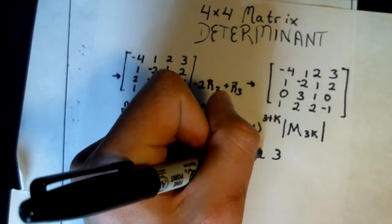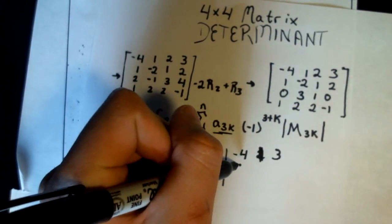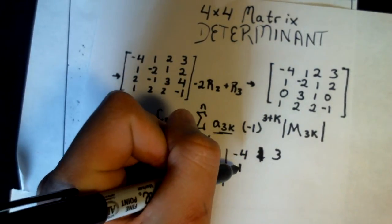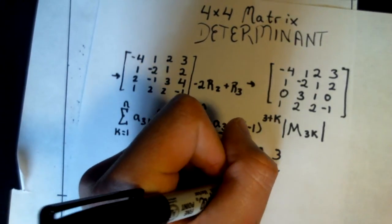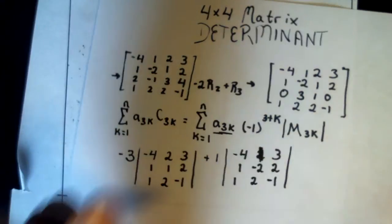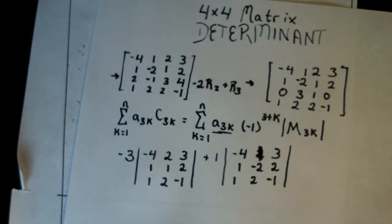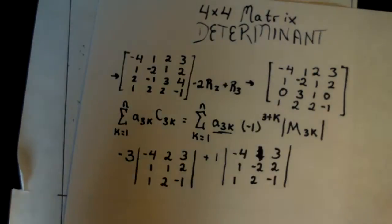Excuse me, this will be a 1. And this will be 1, negative 2, 2, 1, 2, negative 1. Okay, now to find a determinant of a 3 by 3 matrix, I'm going to take a kind of a quick route through.